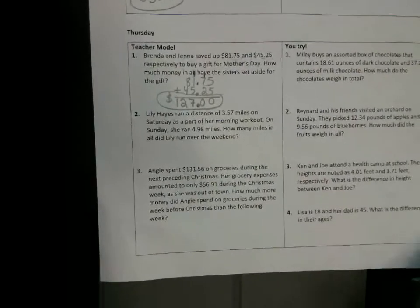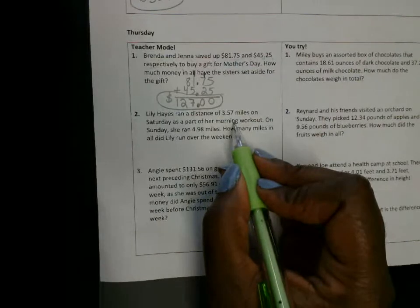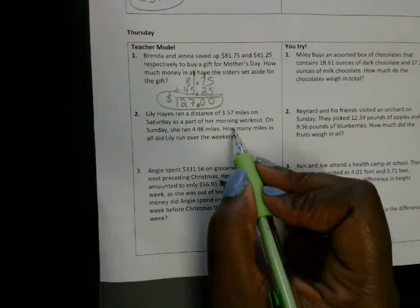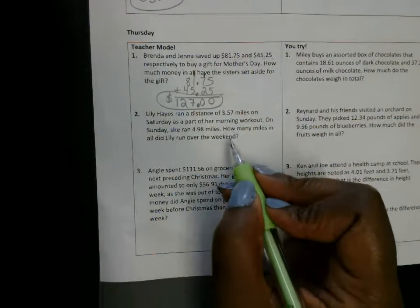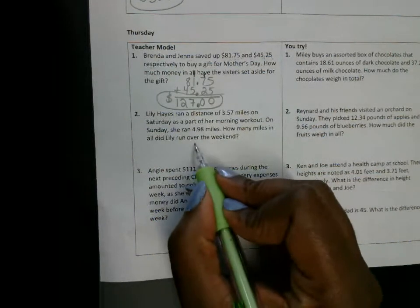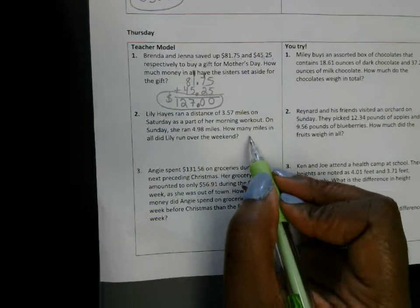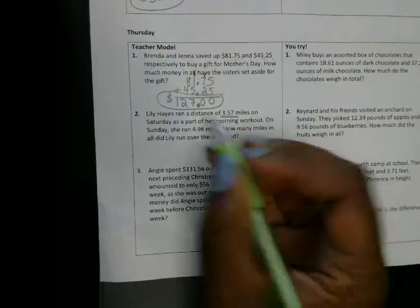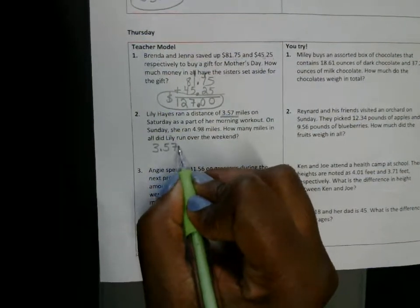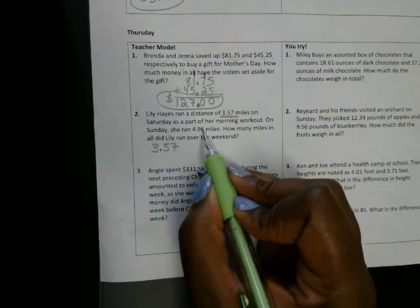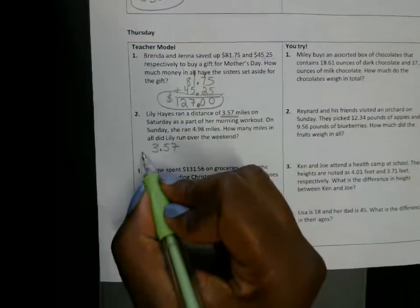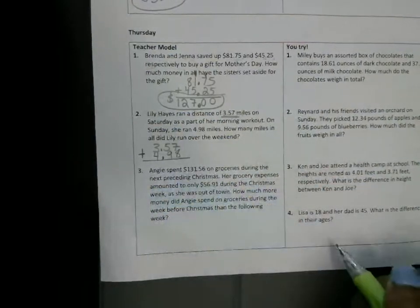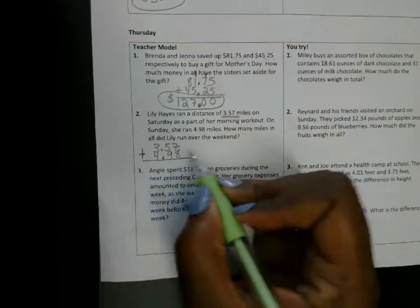Number two. Lily Hayes ran a distance of three point fifty seven miles on Saturday as a part of her morning workout. On Sunday, she ran four point ninety eight miles. How many miles in all did Lily run over the weekend? Saturday and Sunday is the weekend. So on Saturday, she ran three point fifty seven miles. On Sunday, she ran four point ninety eight miles. So you're going to add those amounts together. You add decimals, line up by the decimal. All right, so here we go. Seven plus eight, use your fingers and your toes.